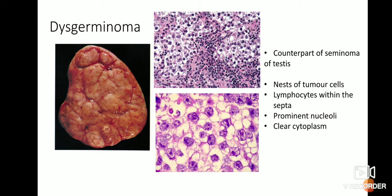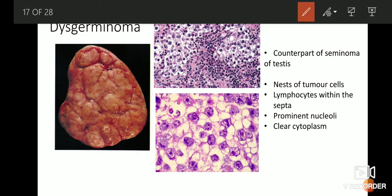The next common type of germ cell tumor is dysgerminoma. Dysgerminoma is the counterpart of seminoma of the testes. The dysgerminoma of the ovary is quite common. The gross picture of dysgerminoma is very typical — the cut surface is usually solid, with no cysts, and has a very fleshy, grey or cream-yellow appearance with nodules within the cut surface.